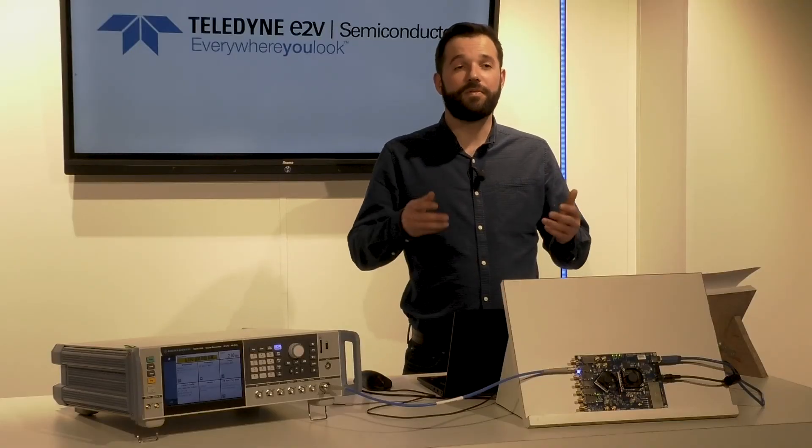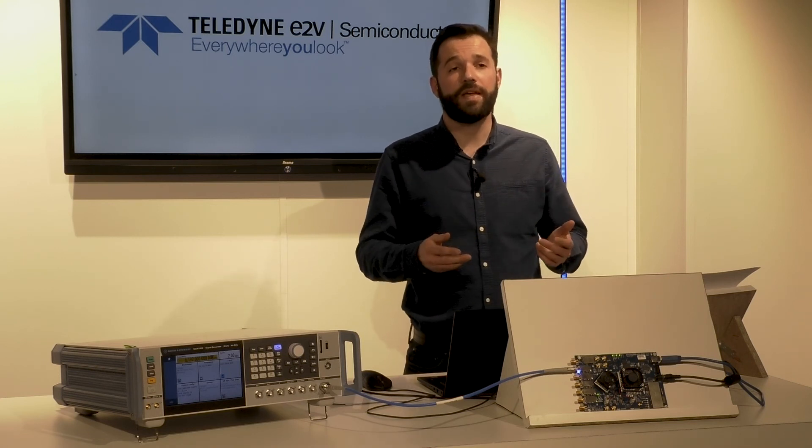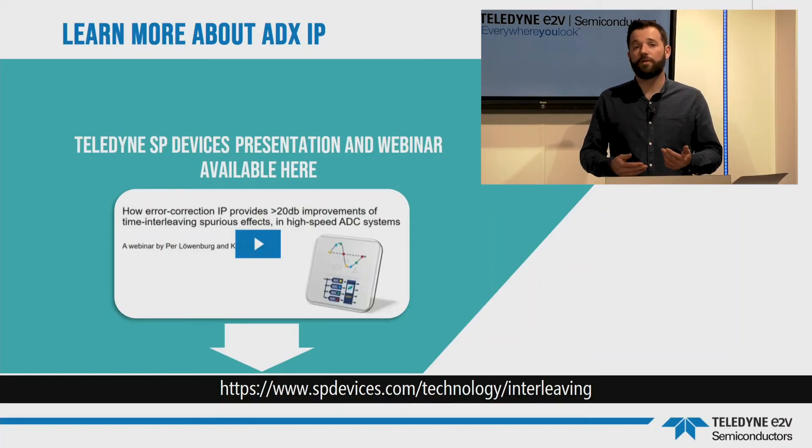This will be an ideal solution to improve the performance of a 12-bit acquisition system, like an oscilloscope, by removing false parasitic spurs. This brings us to the end of this introductory video. Now you know how the Teledyne SP Devices ADX2 IP can improve the performance of the ADC EV12 AQ600 with minimal cost and development time. To learn how the ADX2 IP works, you can follow this link, also available in the description of this video.